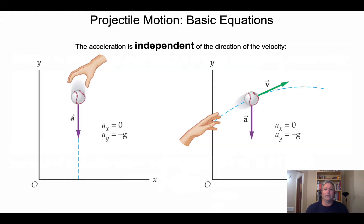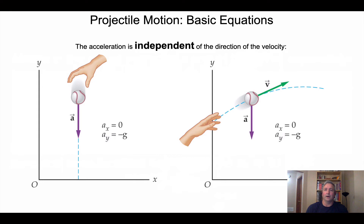In free fall, horizontal acceleration is zero and vertical acceleration is g. A projectile is simply free fall with some horizontal motion added — the baseball thrown to the right still has zero horizontal acceleration while vertical acceleration remains g. The two dimensions are independent, so only vertical motion is accelerated, producing the characteristic parabolic trajectory: one direction accelerated (vertical), one direction not (horizontal).